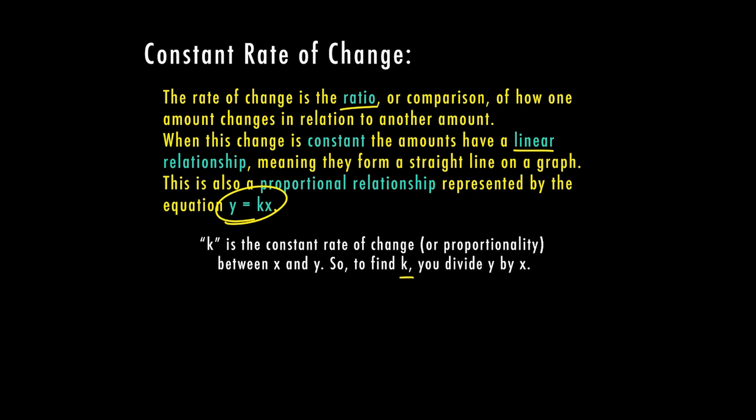So in order to find k, you want to divide y by x. And you're going to get those amounts from each of your ordered pairs. So once you divide y by x and you get k, then you want to plug in k back into your equation y equals kx that we mentioned right up here. So this is going to all tie into the constant rate of change. So let's go ahead with some examples.